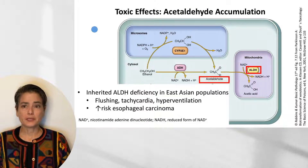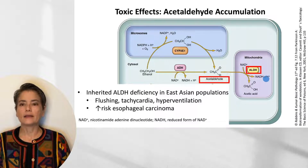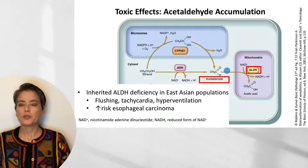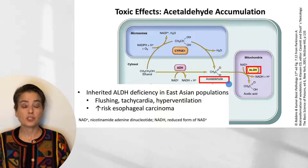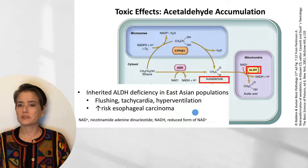In some circumstances we can get accumulation of acetaldehyde. All three enzymes — cytochrome P450, alcohol dehydrogenase, and catalase — generate acetaldehyde. There is an inherited deficiency of aldehyde dehydrogenase in some East Asian populations. When this enzyme is impaired, we get backup of the upstream substrate: accumulation of acetaldehyde, which is a toxic and reactive metabolite. This can lead to flushing, tachycardia, and hyperventilation. Acetaldehyde has been implicated in a number of malignancies, and studies show an increased risk of esophageal carcinoma in individuals with this inherited ALDH deficiency.